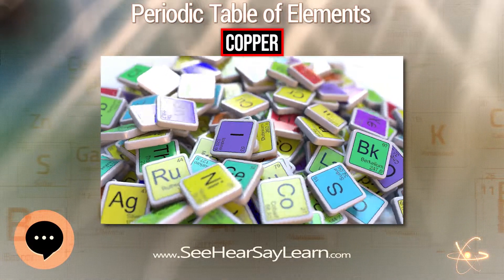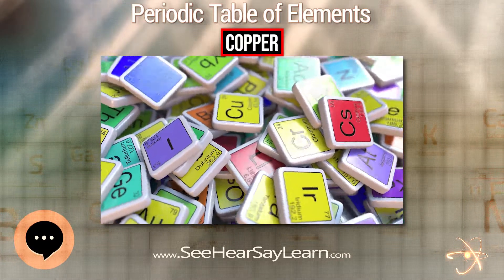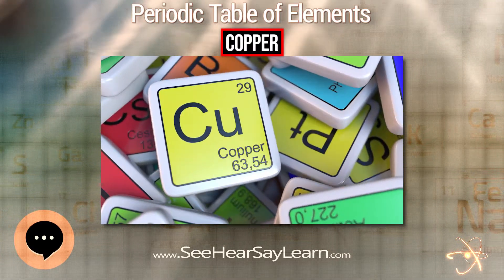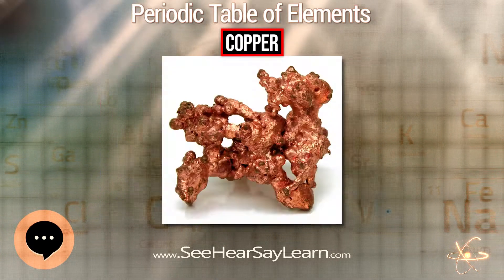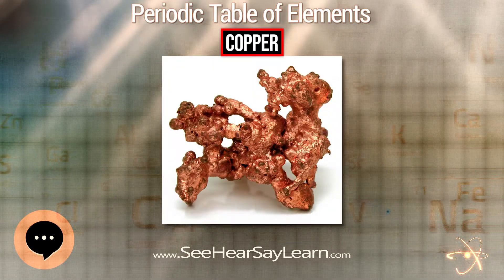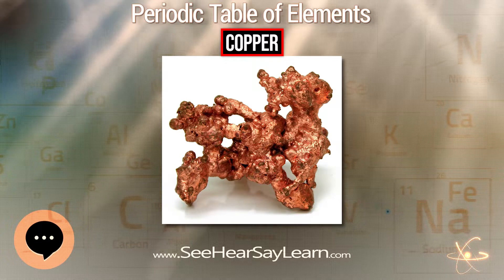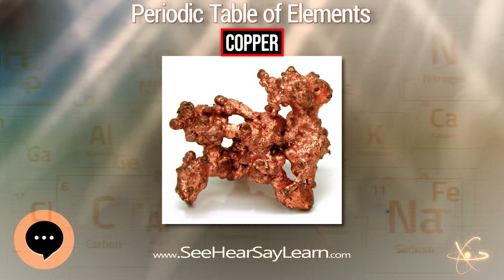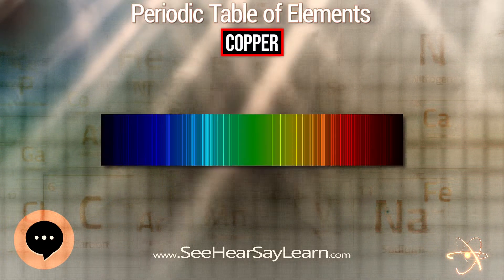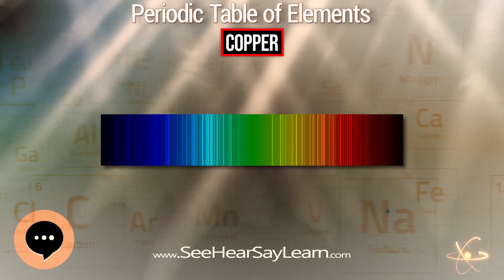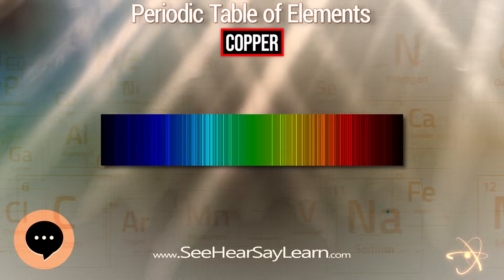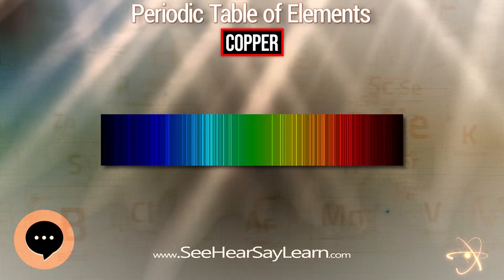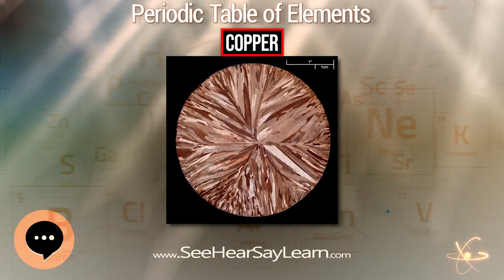Copper is a chemical element with symbol Cu and atomic number 29. It is a soft, malleable and ductile metal with very high thermal and electrical conductivity. A freshly exposed surface of pure copper has a pinkish orange color.